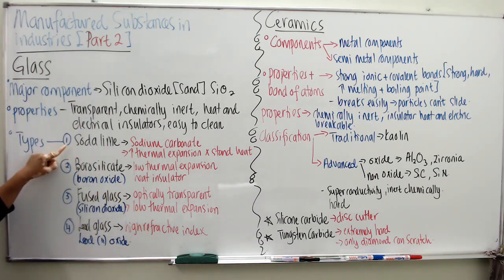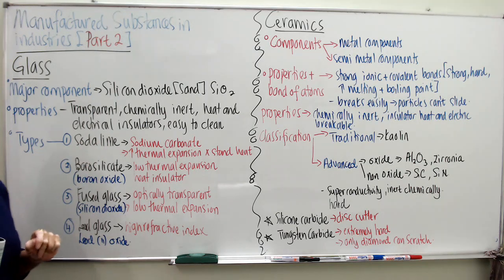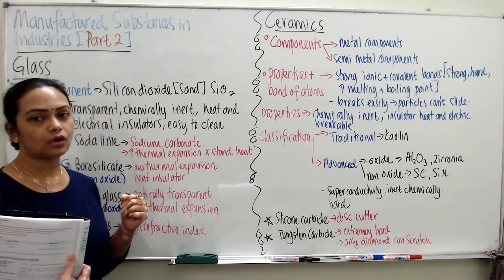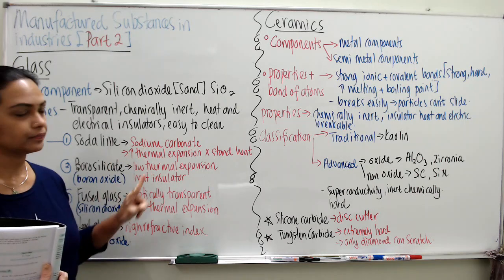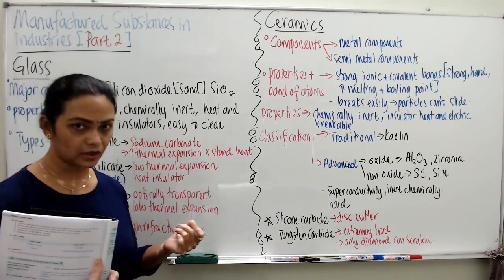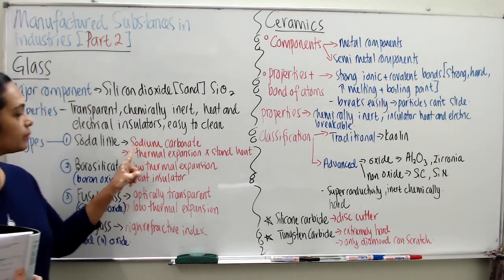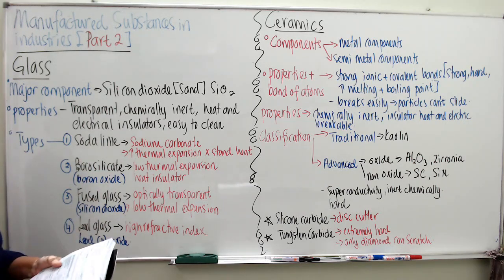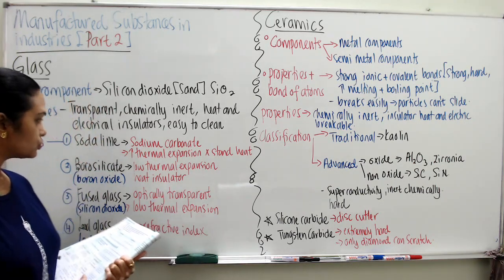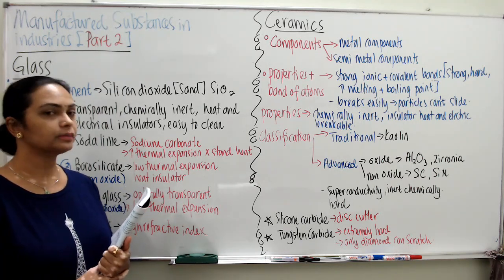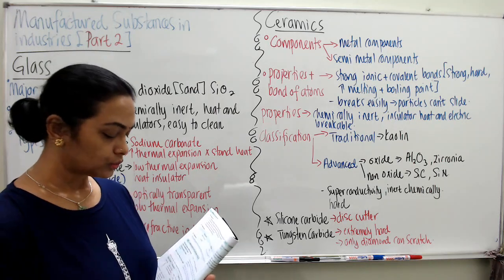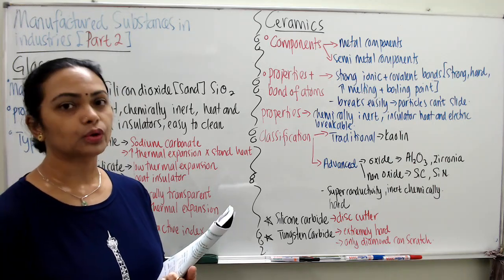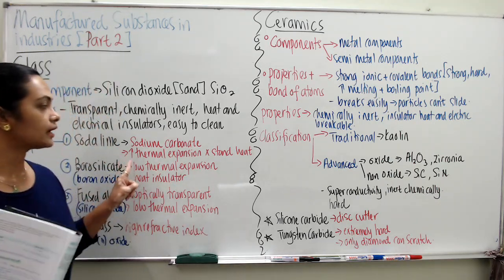The first type is soda lime glass. The main constituent is sodium — another word for sodium is 'soda' — from sodium carbonate. Soda lime glass has high thermal expansion but unfortunately cannot withstand heat. That is why it is used to make electrical bulbs, mirrors, and glass containers. Remember: soda lime glass cannot be heated up.